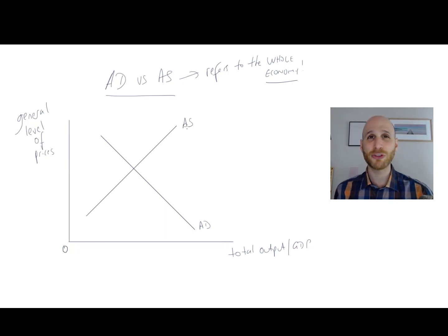And then we can draw equilibrium and let's call it point A. So we've got the general level of prices that occurs in the economy. And then we've got the level of output that occurs in the economy at point A.